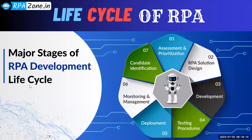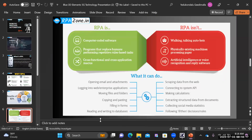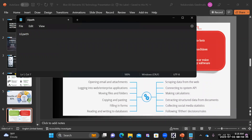Several RPA tools are available in the market. The popular ones include UiPath, Automation Anywhere, Blue Prism, Power Automate, and Robocard. These are some of the most widely used RPA tools today.